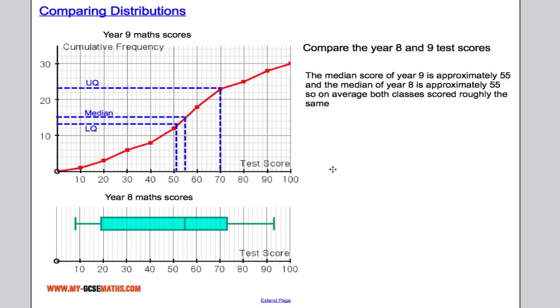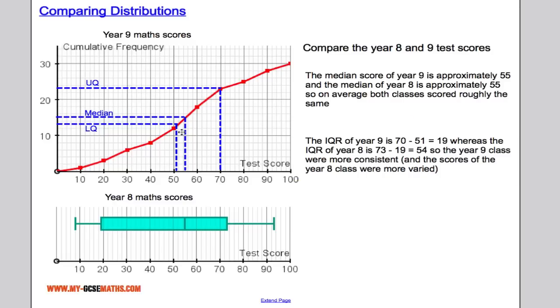But if we take a look at the interquartile range for both classes, we can see that the year 9's interquartile range is actually 19. So we got 70, take away 51 gave us the 19.